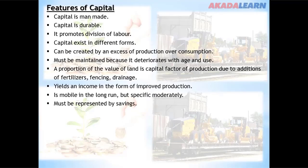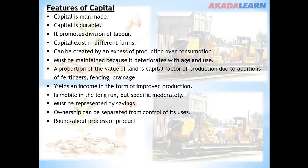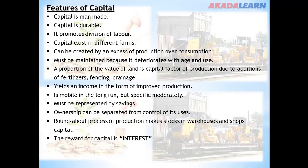Capital must be represented by saving. Ownership of capital can be separated from control of its users. The roundabout process of production makes stocks in warehouses and shops capital. The reward of capital is interest.